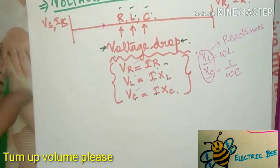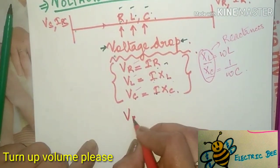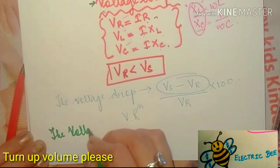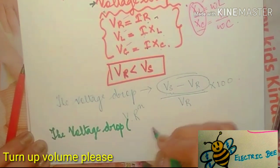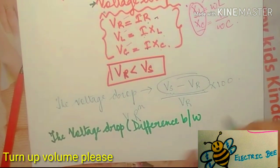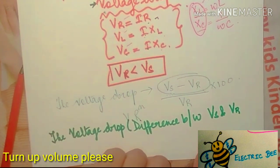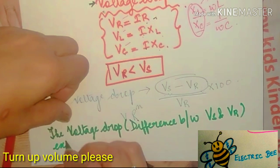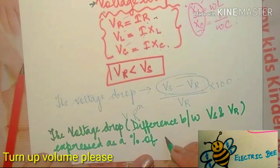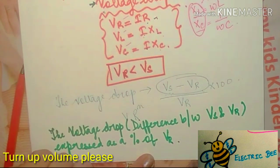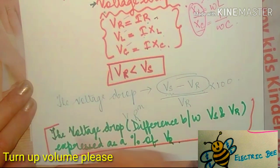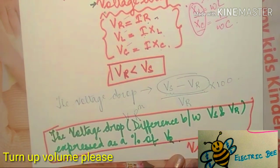Since current flows through the transmission line, the product of current with resistance, inductive reactance, and capacitive reactance causes overall voltage drops. That is why the receiving end voltage is generally less than the sending end voltage. The difference between sending and receiving end voltage, expressed as a percentage of the receiving end voltage, is known as voltage regulation.